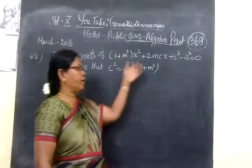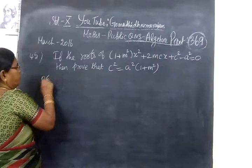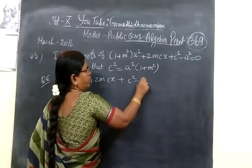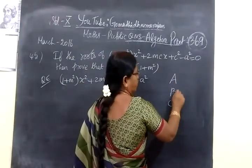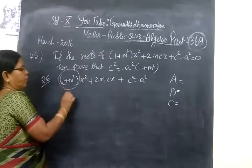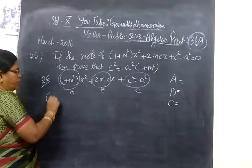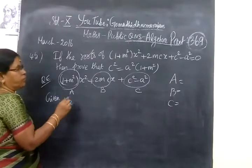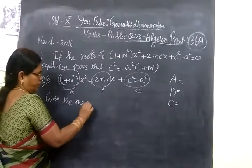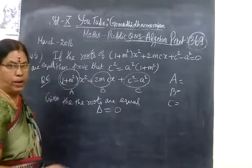So next: if the roots of the quadratic equation are equal, we have to prove that c² equals a²(1+m²). The quadratic equation is (1+m²)x² + 2mcx + (c²-a²) = 0. Given the roots are equal, we know delta equals 0.